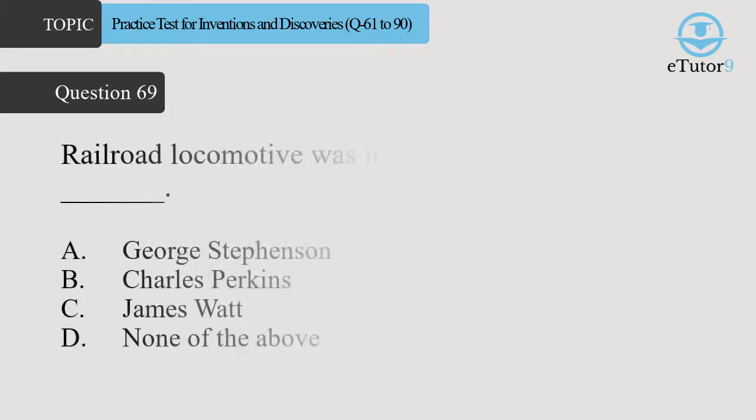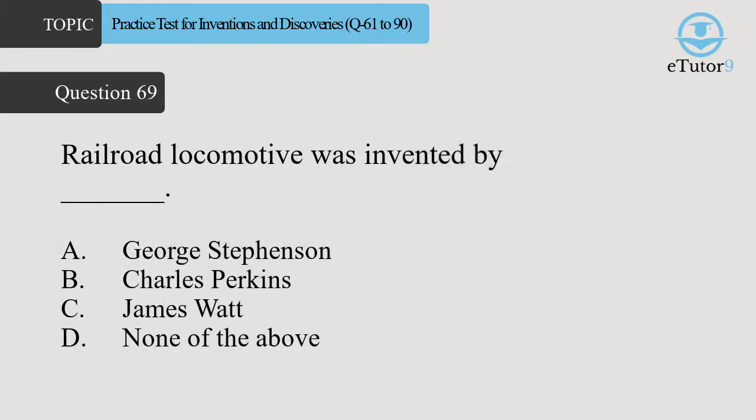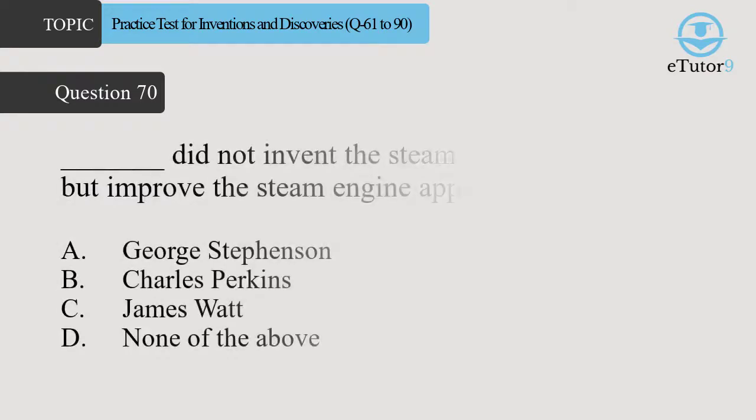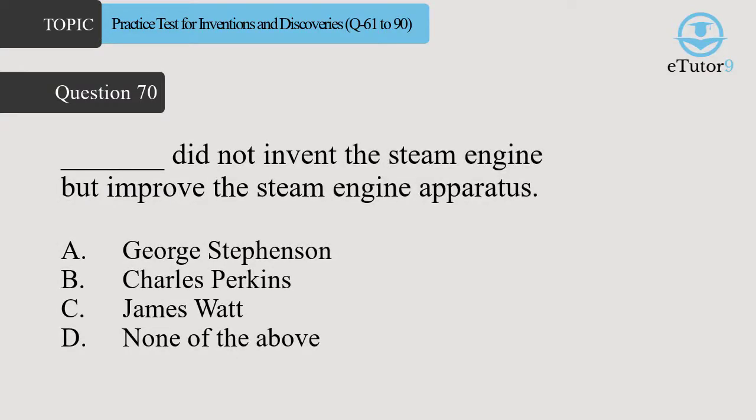Question 69. Railroad locomotive was invented by Dash? Answer is A. George Stephenson. Question 70. Dash did not invent the steam engine, but improved the steam engine apparatus. Answer is C. James Watt.